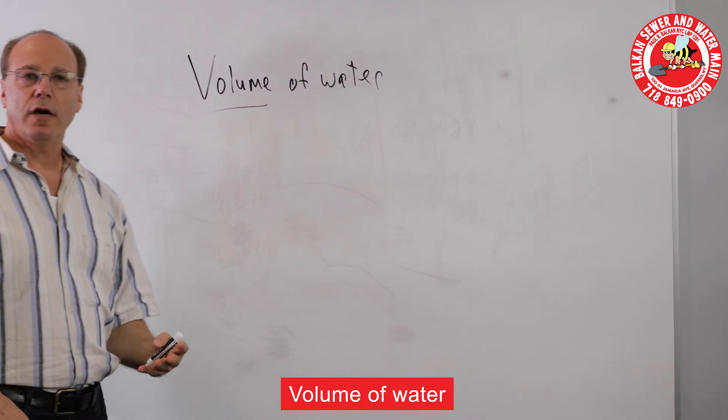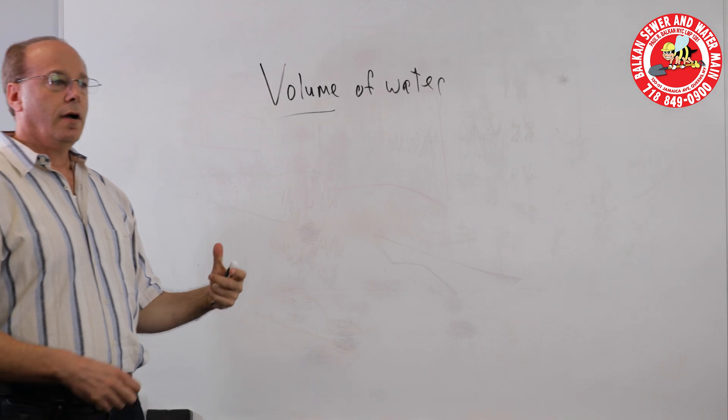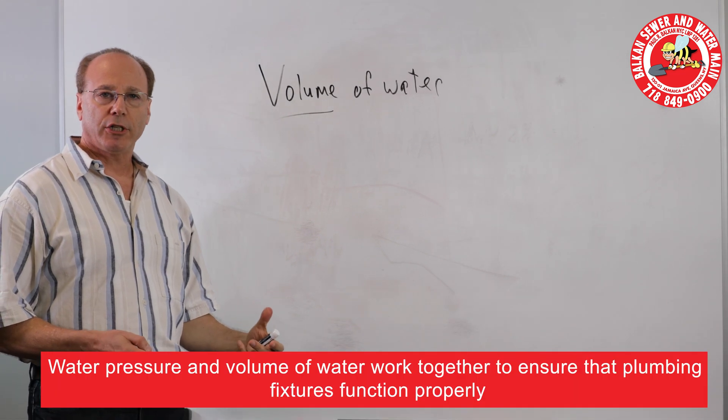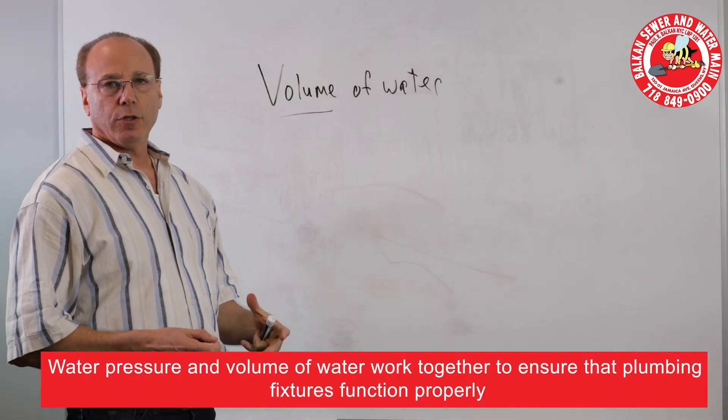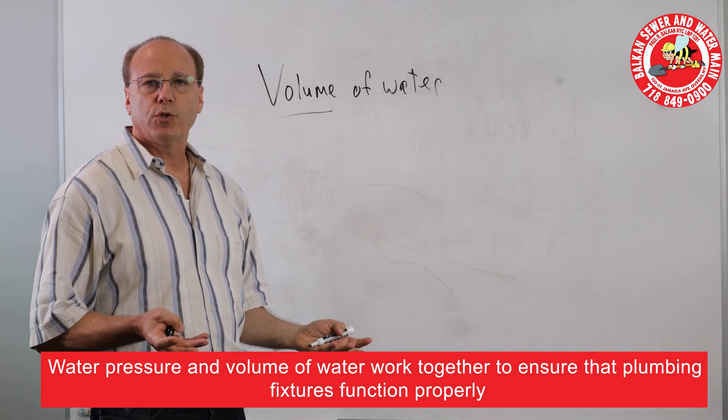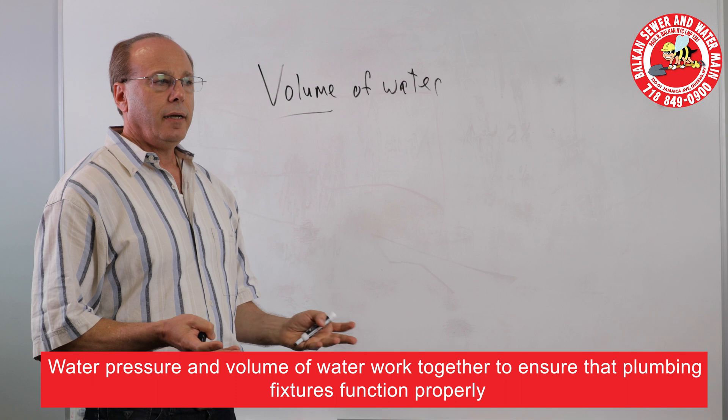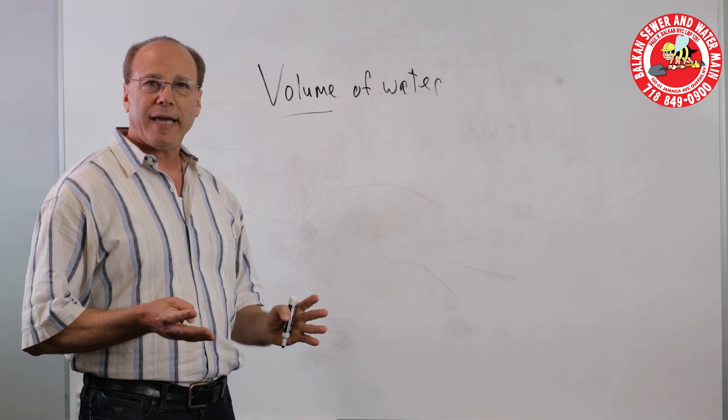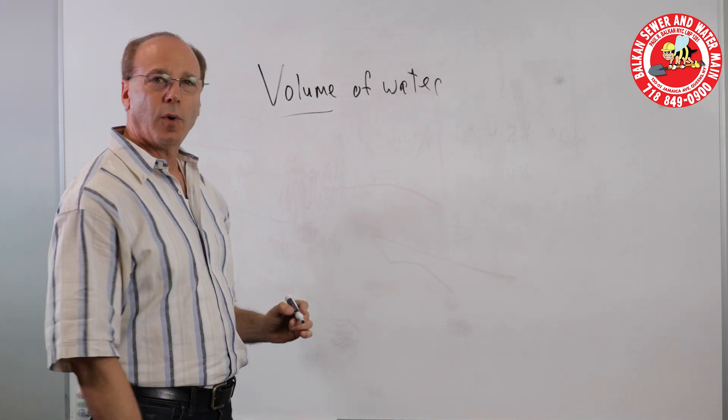Volume of water is the other part of the equation with water pressure that gives you the desired or required amount of water that lets everything in your house work properly. It should be easy to understand, but people's minds tend to work differently.